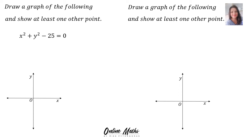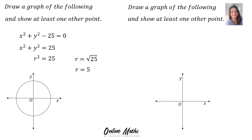Draw a graph of the following and show at least one other point, given x² + y² − 25 = 0. We rearrange to standard form: x² + y² = 25. To sketch the circle we need the radius, so r² = 25, and taking the square root gives r = 5. Therefore, there is your circle with the origin as the midpoint and radius 5. A point on the circle is the x-intercept, the point (5, 0).